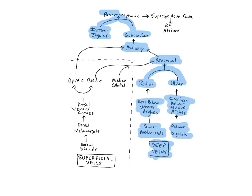The brachiocephalic veins are the last of the deep veins, forming through the union of the subclavian and internal jugular veins. The brachiocephalics drain into the superior vena cava, which delivers blood into the right atrium of the heart. The brachiocephalics drain blood from the head, neck, upper limbs, mammary glands, and superior thorax.